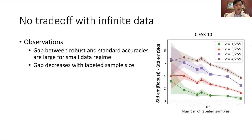Our empirical observations also support the setting where there is no trade-off with infinite data. In CIFAR, we observe that the gap between the robust and standard accuracies are large in the small data regime, and then it decreases with more labeled data.